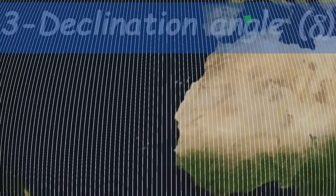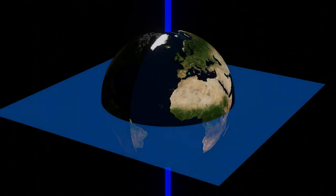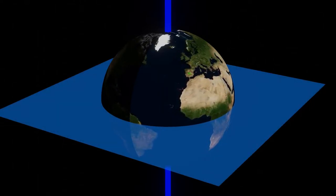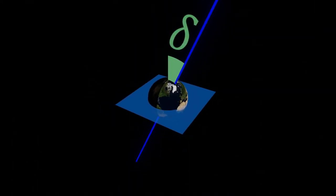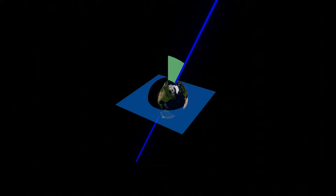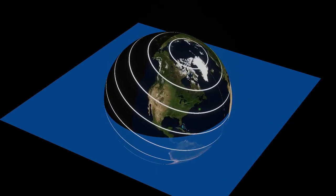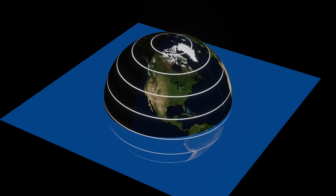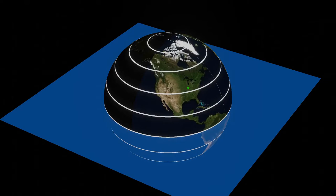Third, the declination angle. Earth does not always rotate about an axis perpendicular to the orbital plane. In fact, this axis can deflect by some angle, which is the declination angle. The declination angle changes as Earth revolves around the sun through the year. When the declination angle (delta) equals zero, the length of the day equals the length of the night at all points on the Earth's surface.